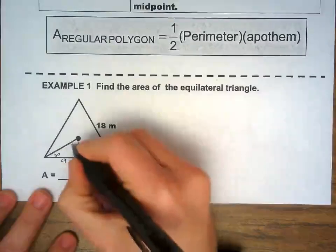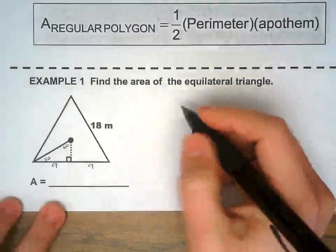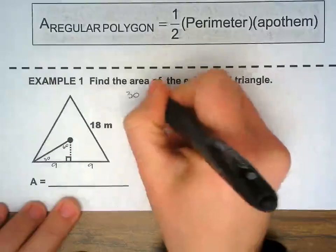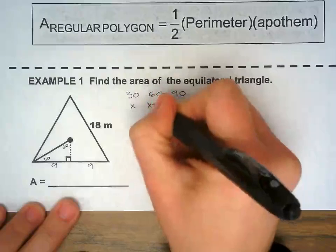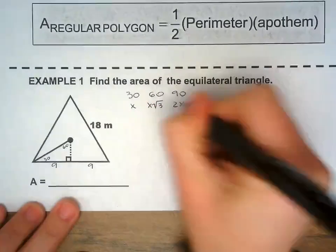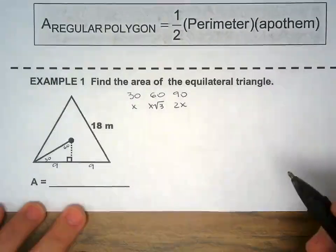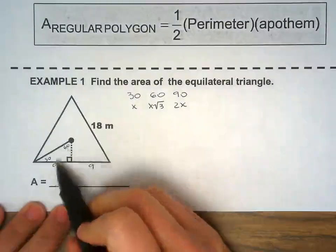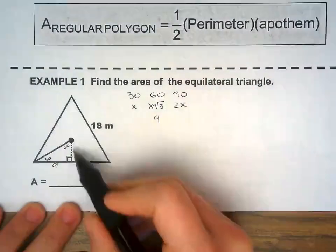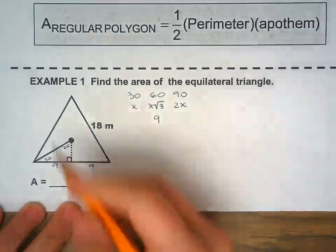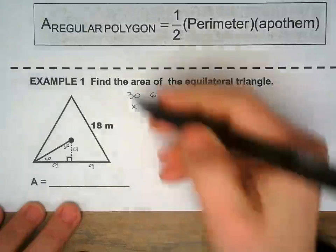And I also know this is a 30-60-90 triangle. I'm gonna make it bigger. So 30-60-90, these are the ratios. Most of you already memorized because we did so much of that. 9 is across from 60, and I need to find the apothem. Apothem is right here, it's right across from 30.